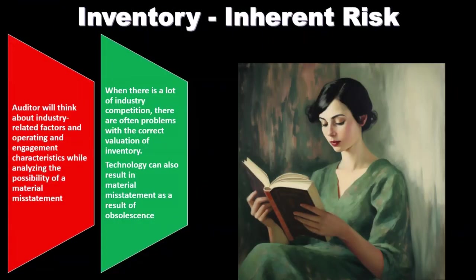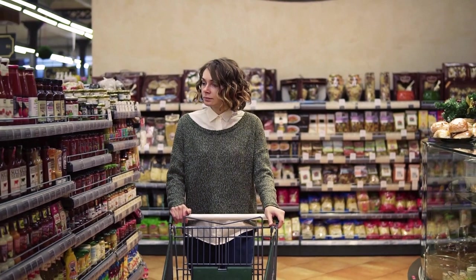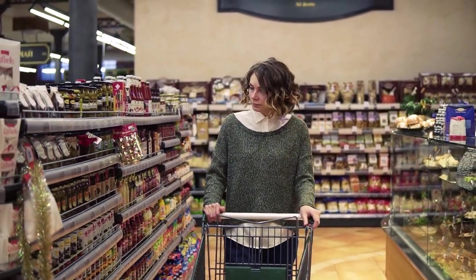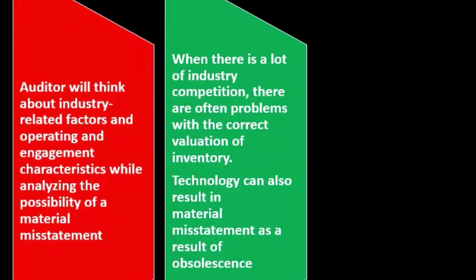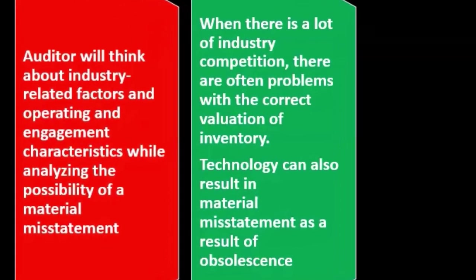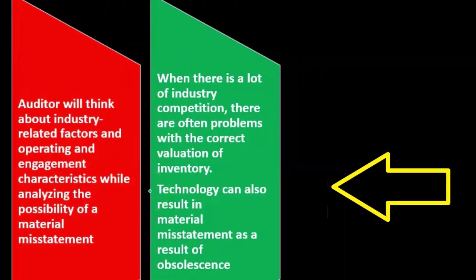Inventory is generally a large asset on the books, and we typically think of it in terms of the lower of cost or market calculation. It's quite possible that if there's a lot of volatility in the market, the value of inventory can decline to below what the cost is — what we either paid for it or produced it for. As auditors, we're concerned because we don't want to overvalue the inventory; we'd rather possibly undervalue than overvalue, as that is the more conservative and safer auditing position.